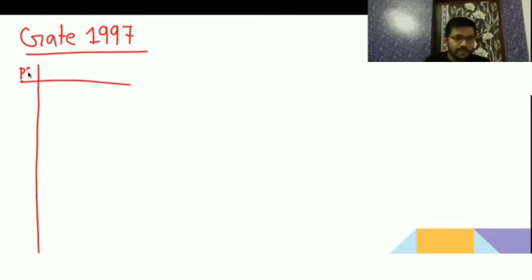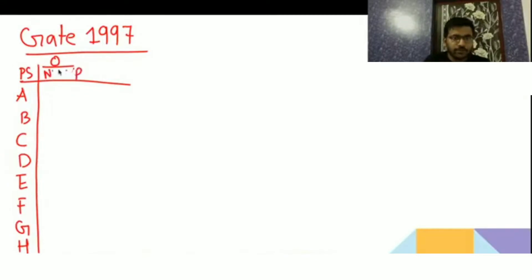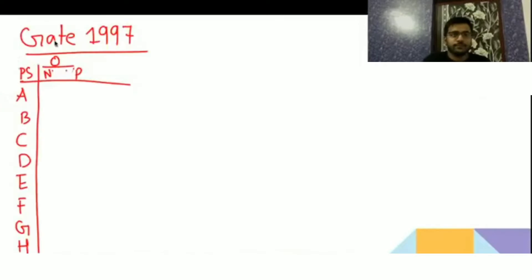So the present states are A, B, C, D, E, F, G, H. The table has columns for input 0 — showing next state and output — and input 1 — showing next state and output.